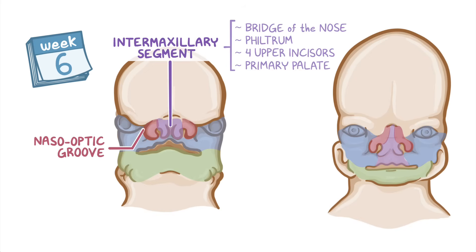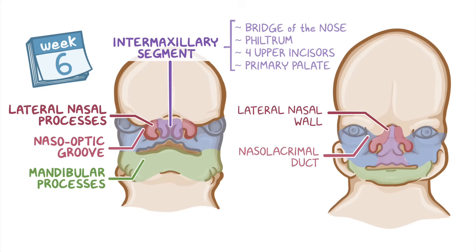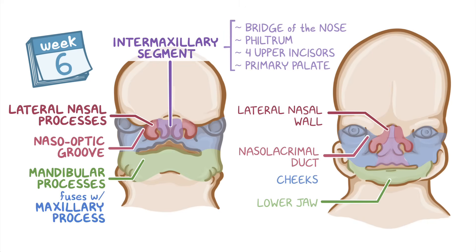The naso-optic groove gets covered on top by ectodermal tissue, converting it into the nasolacrimal duct. The lateral nasal processes develop into the lateral nasal wall. The mandibular processes form the lower jaw with all its teeth and the lower lip, and fuse with the maxillary processes to form the cheeks.